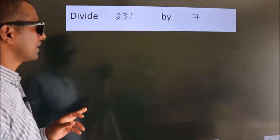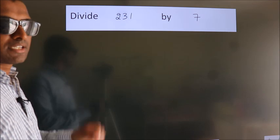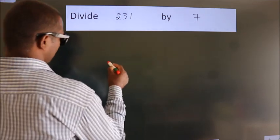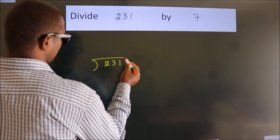Divide 231 by 7. To do this division, we should frame it in this way. 231 here, 7 here.